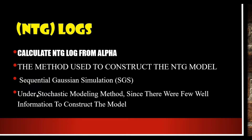Sequential Gaussian simulation is under stochastic modeling. Stochastic modeling is the method used when you have few data points. If you have a lot of data, you can use deterministic modeling methods. Since we only have nine wells, we need to use stochastic methods. The software will distribute the data throughout the model using stochastic modeling, which is what we will apply here.